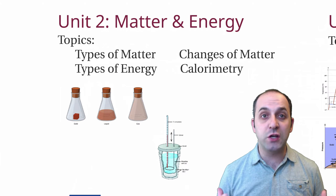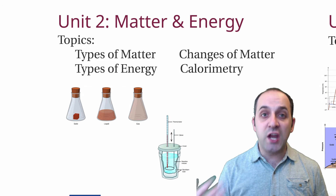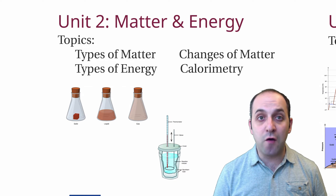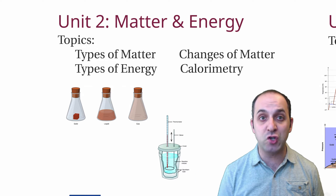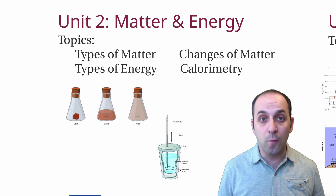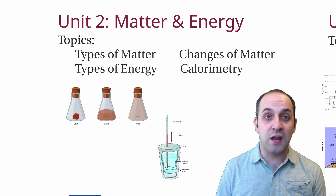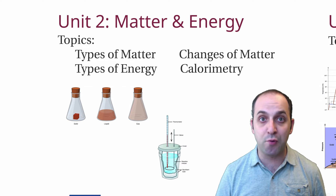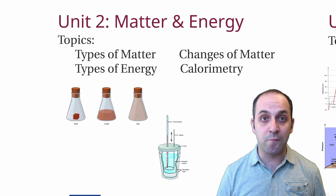In our matter and energy unit we're going to look at types of matter, changes of matter, the types of energy involved in interacting with matter, and the math involved in measuring how much energy is stored in a substance through a process called calorimetry. This presentation is linked in the info field if you want to fire it up on Prezi and play around with it to see how we've organized everything.